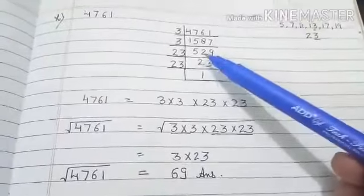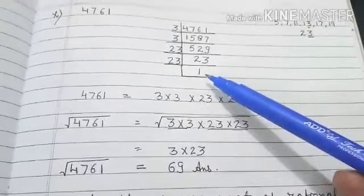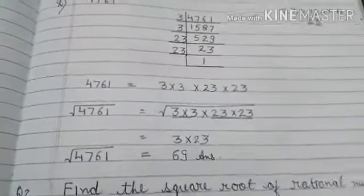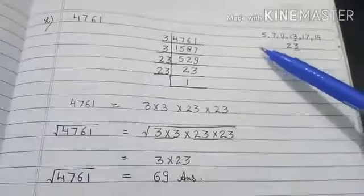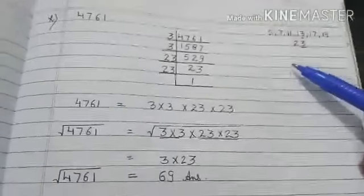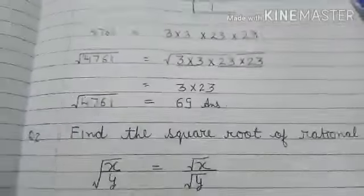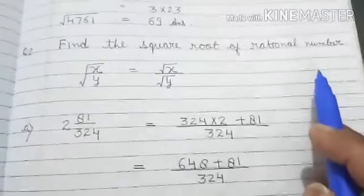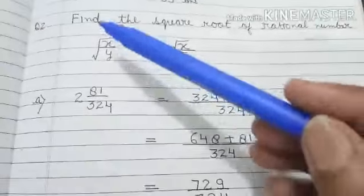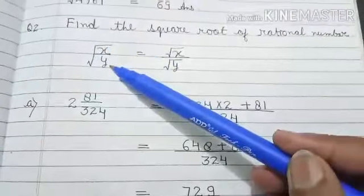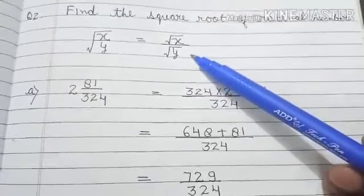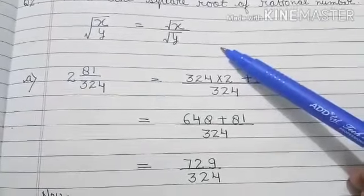And the easiest method is, if you know 23 squared, then you can write it directly. So in this way, your number is done. Now your next topic is finding the square root of rational numbers. Rational numbers are written in the form of numerator and denominator. So when you find the square root of a rational number, you will find the square root of the numerator separately and the square root of the denominator separately, and then we will write it in fraction form in the end.